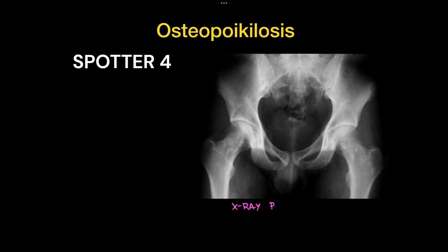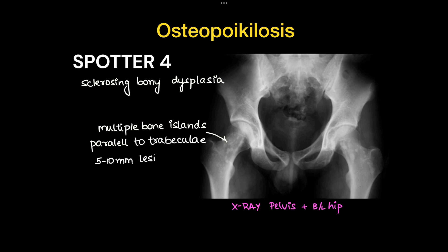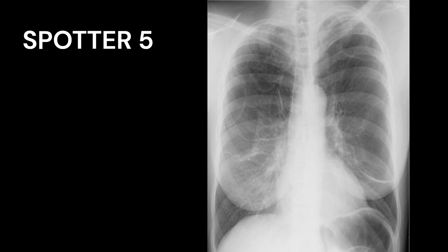This is a case of osteopoikilosis on x-ray pelvis AP bilateral hip view. This is a sclerosing bony dysplasia where multiple bony islands are seen, mainly in the metaphyseal and epiphyseal regions. They are parallel to the trabeculae, are 5-10 mm lesions, and most commonly affect the appendicular skeleton, rarely the axial skeleton.